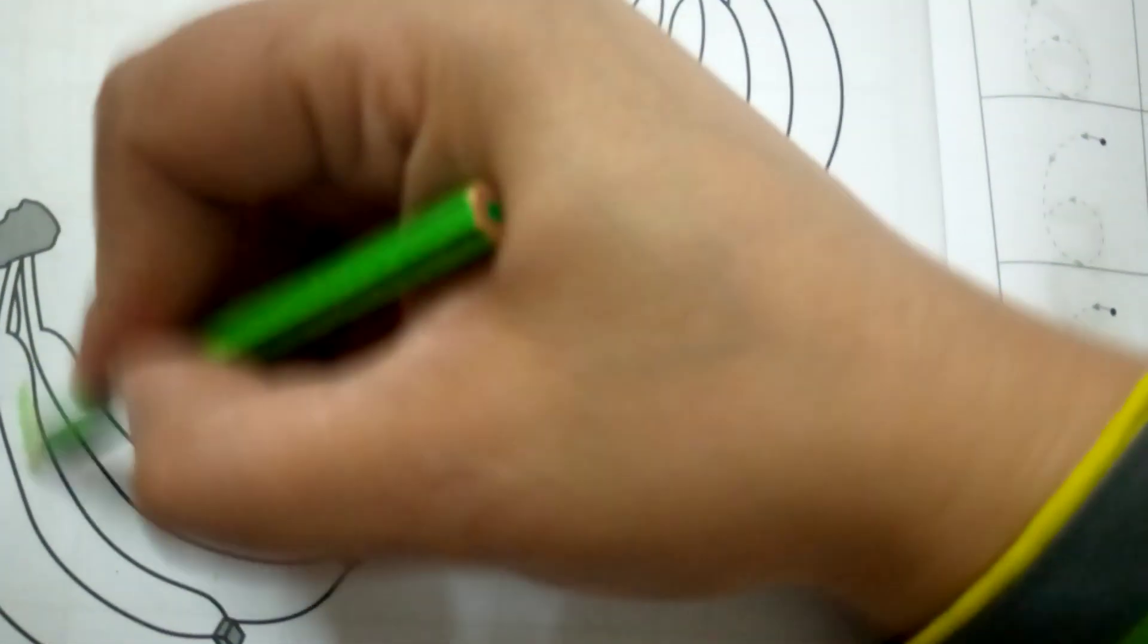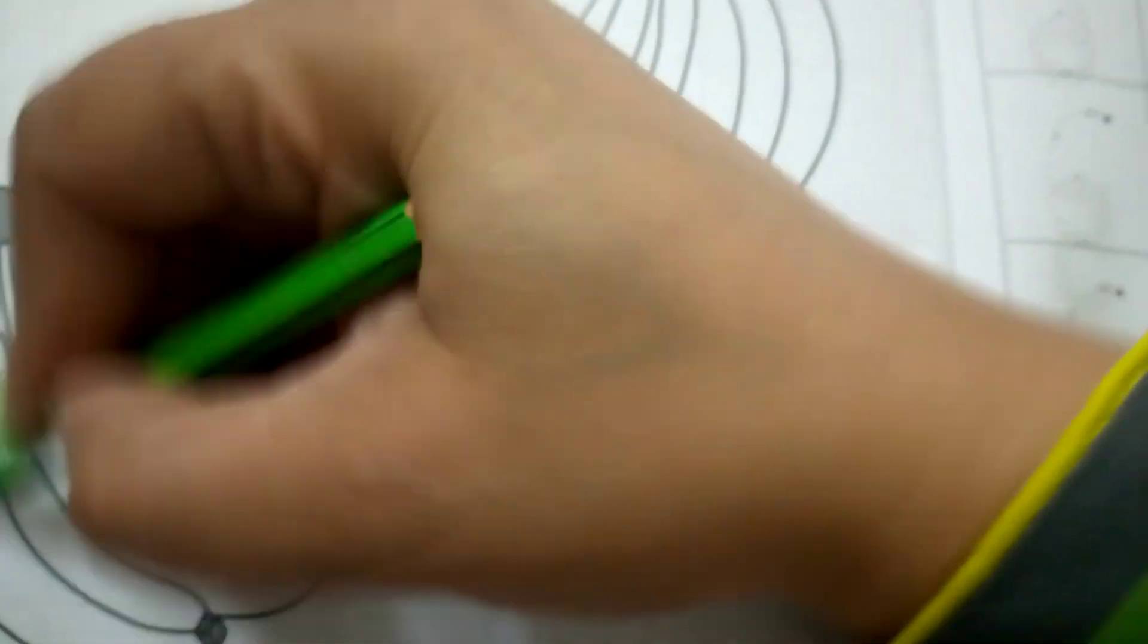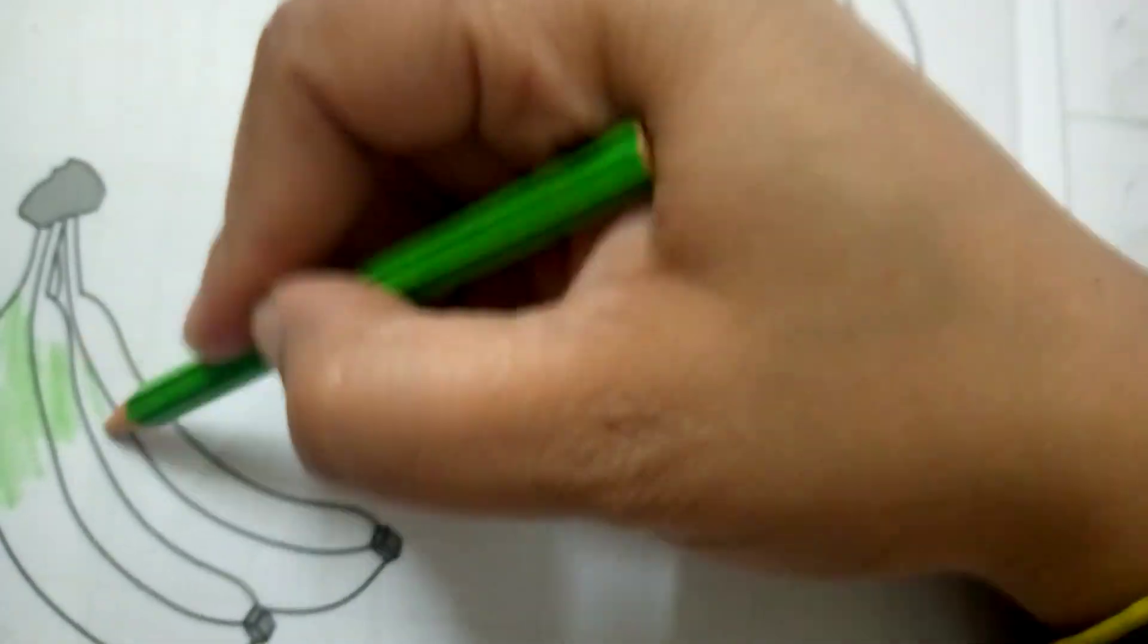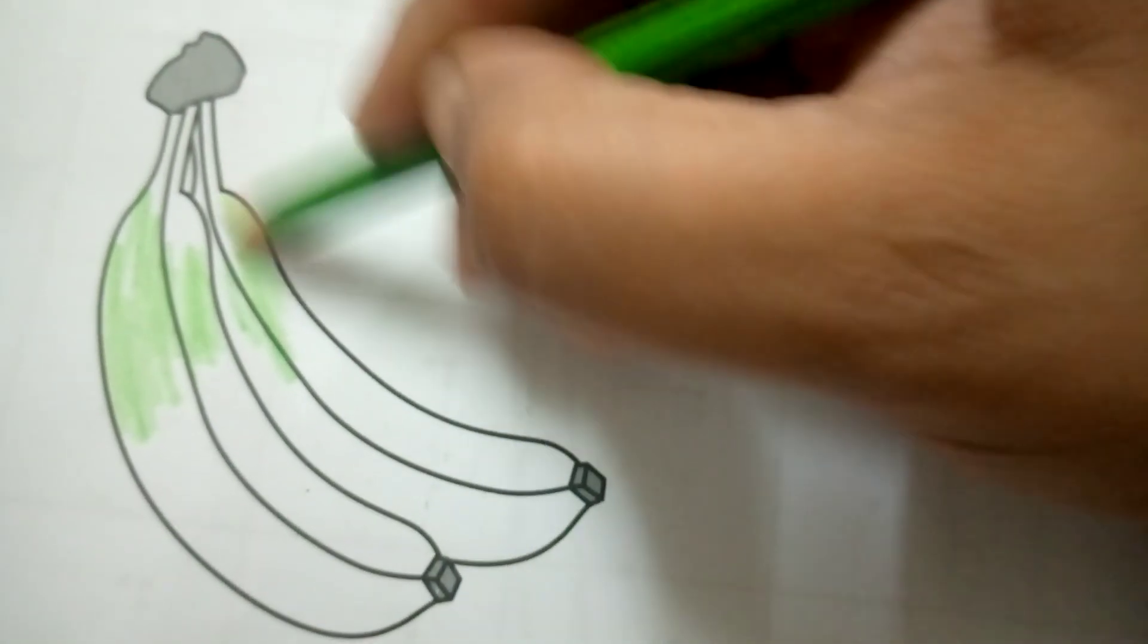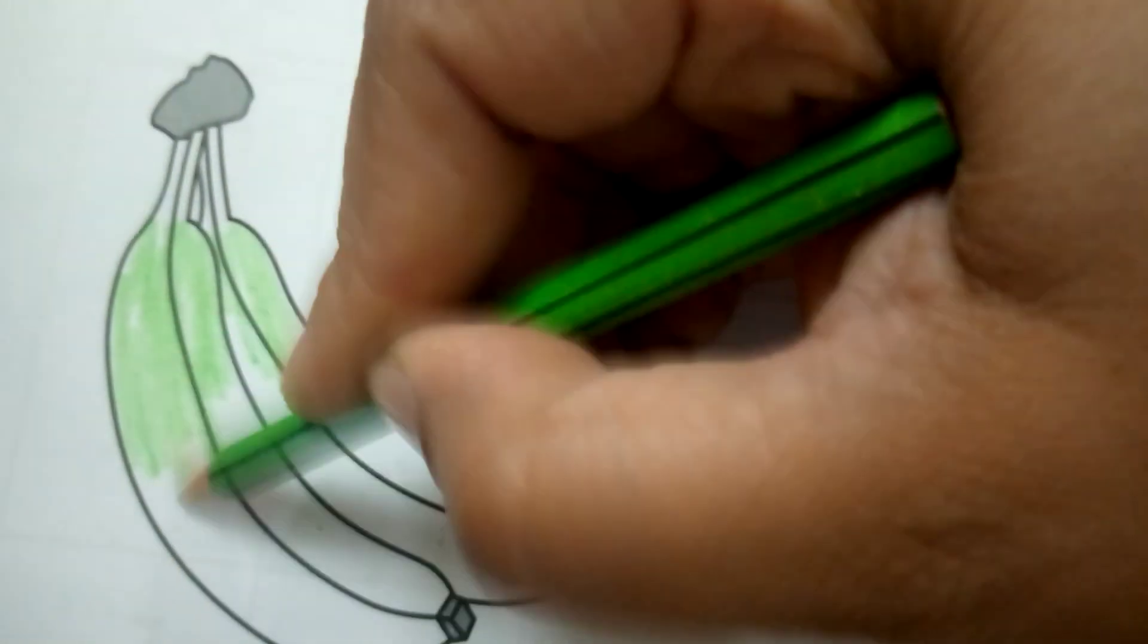You have to do green color in few bananas, okay? Try to do neat color, don't leave the white space and don't make your color go out from the boundary. Try to do neat color within the outline.